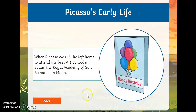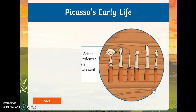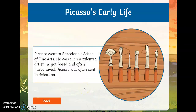Before that, when he was 16, he left home to attend the best art school in Spain — the Royal Academy of San Fernando in Madrid. Picasso also went to Barcelona's School of Fine Arts. He was such a talented artist that he really kind of knew everything already because he was a genius. He often got bored and misbehaved in class and was often in trouble and got sent to detention.